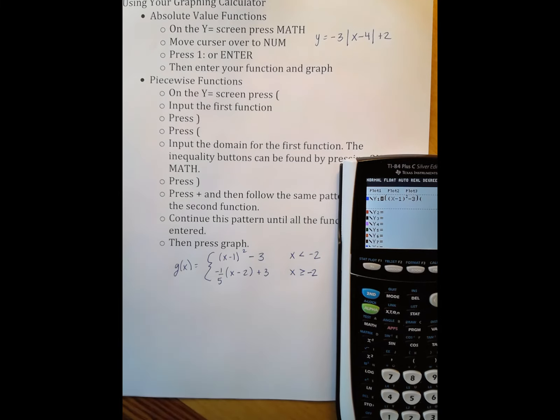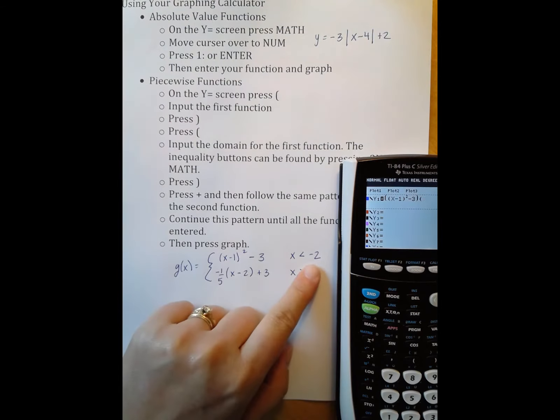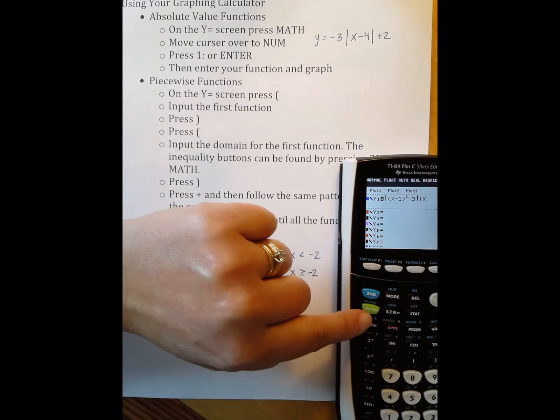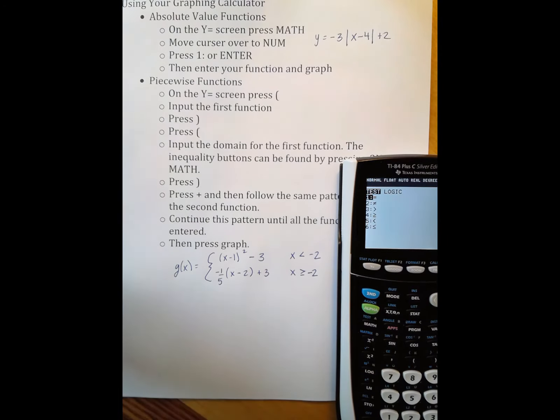I'm going to open parentheses again. This time I'm going to input the subdomain. So I have x and I have less than negative 2. To find that less than button, I press second math or test. I can see here that 5 is the button I want to press right now. I want it to be less than negative 2. So 5, I put in negative 2, and then I close parentheses. I've now inputted the first sub function and its subdomain. I need the second one.